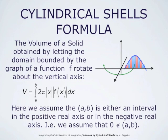To summarize, the volume of a solid obtained by letting the domain bounded by the graph of a function f rotate about the vertical axis is given by the integral from a to b of 2 pi times |x| times |f(x)| dx. This formula is valid assuming that 0 is not contained in the open interval from a to b — that is, a cannot be negative if b is positive. In many cases, this formula is much simpler than computing the volume by slicing or other methods.